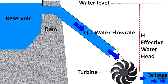Before going into the calculations, let me explain two important things. One, the water flow rate Q, and the second one is H, the effective water head. These two key parameters are the ones which decide the output power.